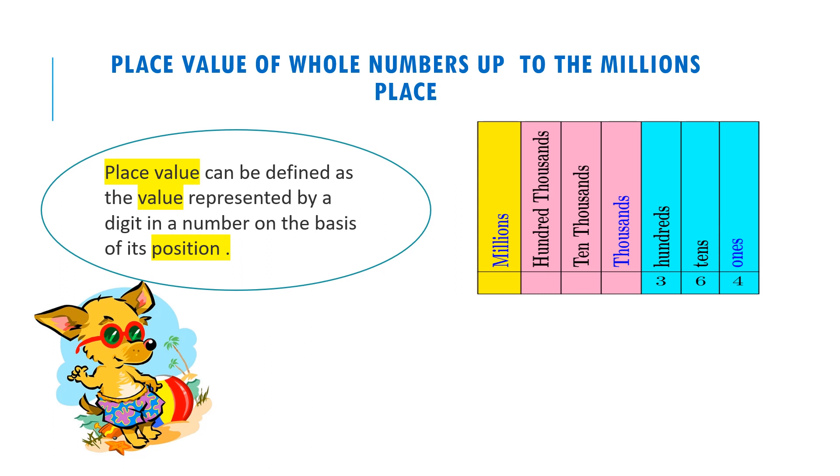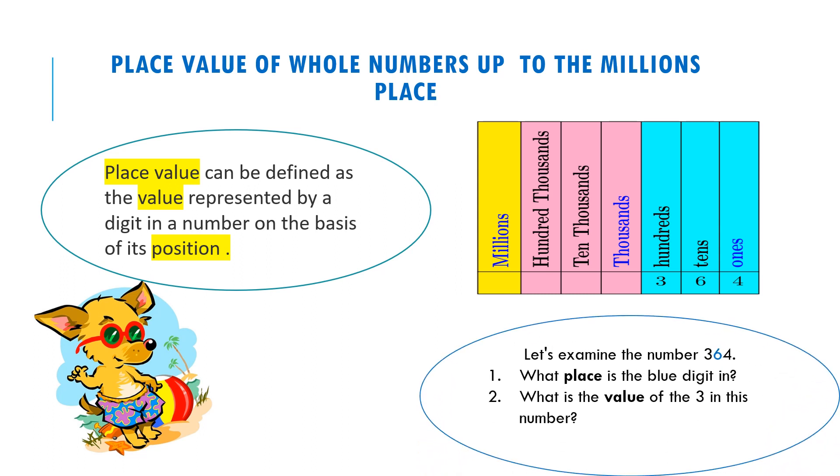Let's examine the number 364. Look closely. What place is the blue digit in this number in? If you guessed tens, you are correct. The digit 6 is in the tens place.